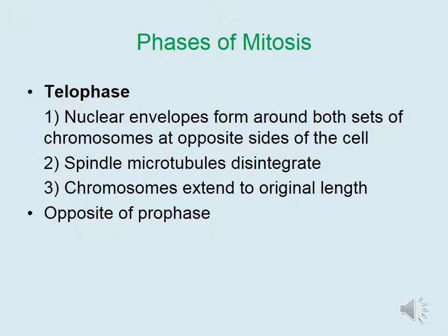During telophase, nuclear envelopes form around both sets of chromosomes at opposite sides of the cell. The spindle microtubules disintegrate or break down since they are no longer needed, and the chromosomes extend back to their original length. All of these events are the exact opposite of what happened during prophase.